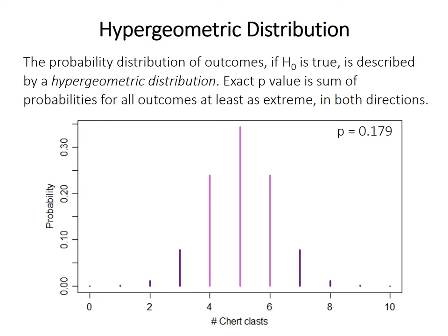The probability of observing a particular outcome in this test is calculated from a discrete probability distribution called the hypergeometric distribution. You've seen a discrete distribution when discussing the binomial test. Like in the exact binomial test, the p-value here is the sum of probabilities for all outcomes at least as extreme as your observation, in both directions — because we didn't have a prior alternative hypothesis that the association should be in only one direction.